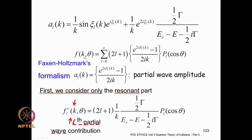For the pure resonance part of the scattering amplitude, we have the factor (2l+1). The partial wave amplitude A_l(k) includes both terms, but we pretend the impenetrable part xi is unimportant, so e^(2i·xi) becomes unity (xi = 0). We are left with only 1/k times the ratio (Gamma/2)/(E_r − E − i·Gamma/2), multiplied by the Legendre polynomial P_l(cos theta). This is the expression for the scattering amplitude from only the pure resonance part.